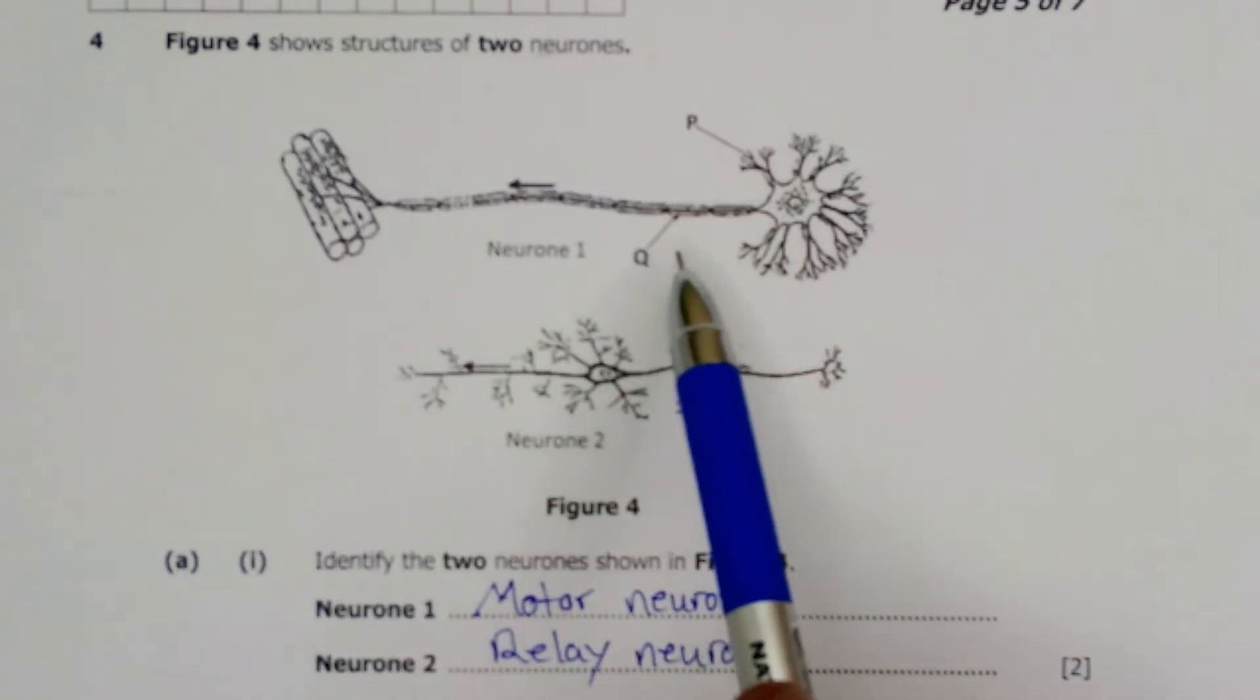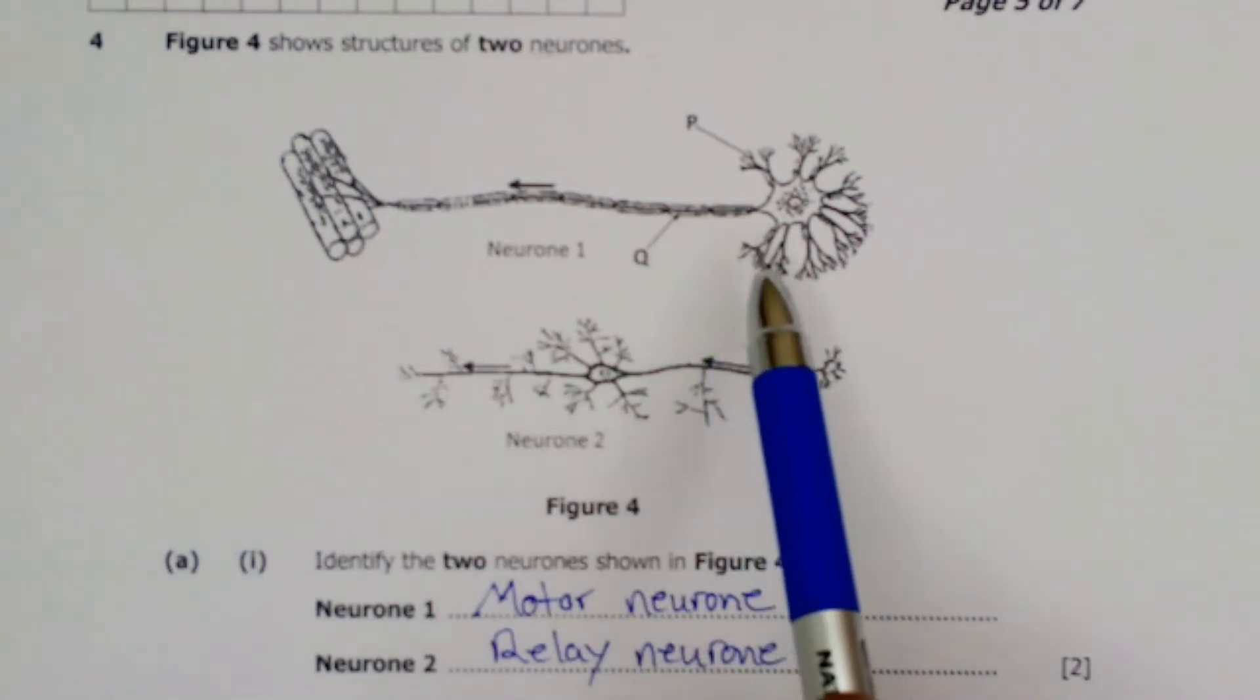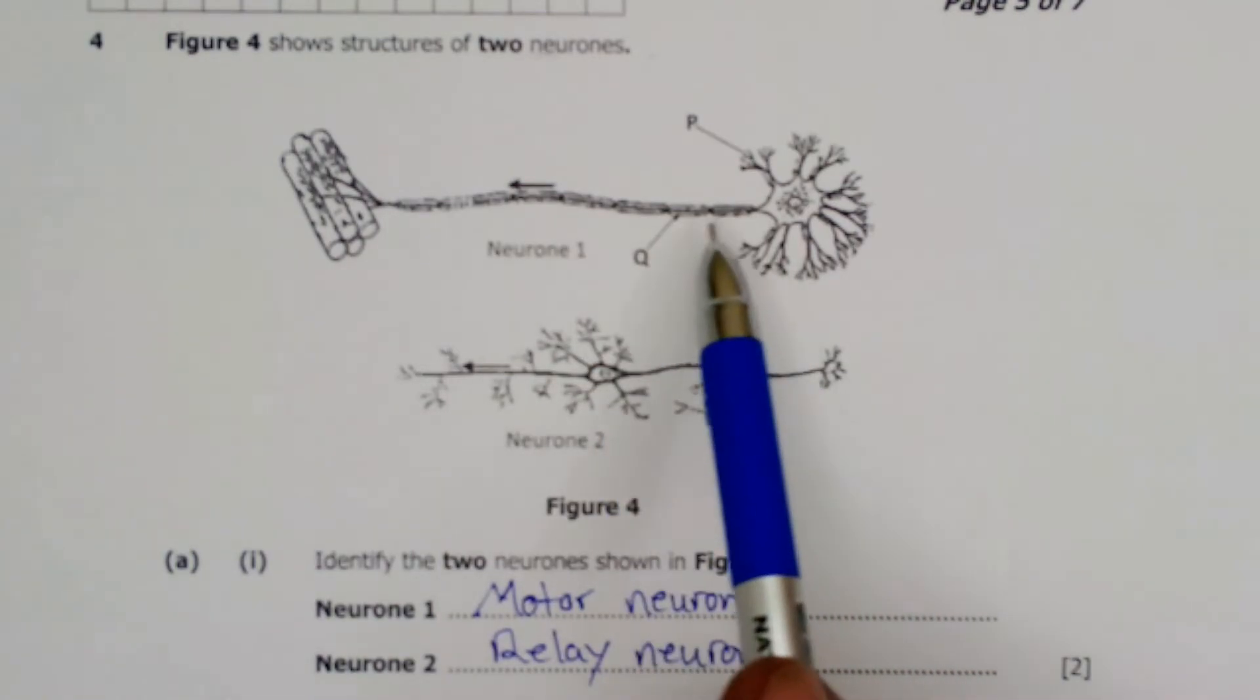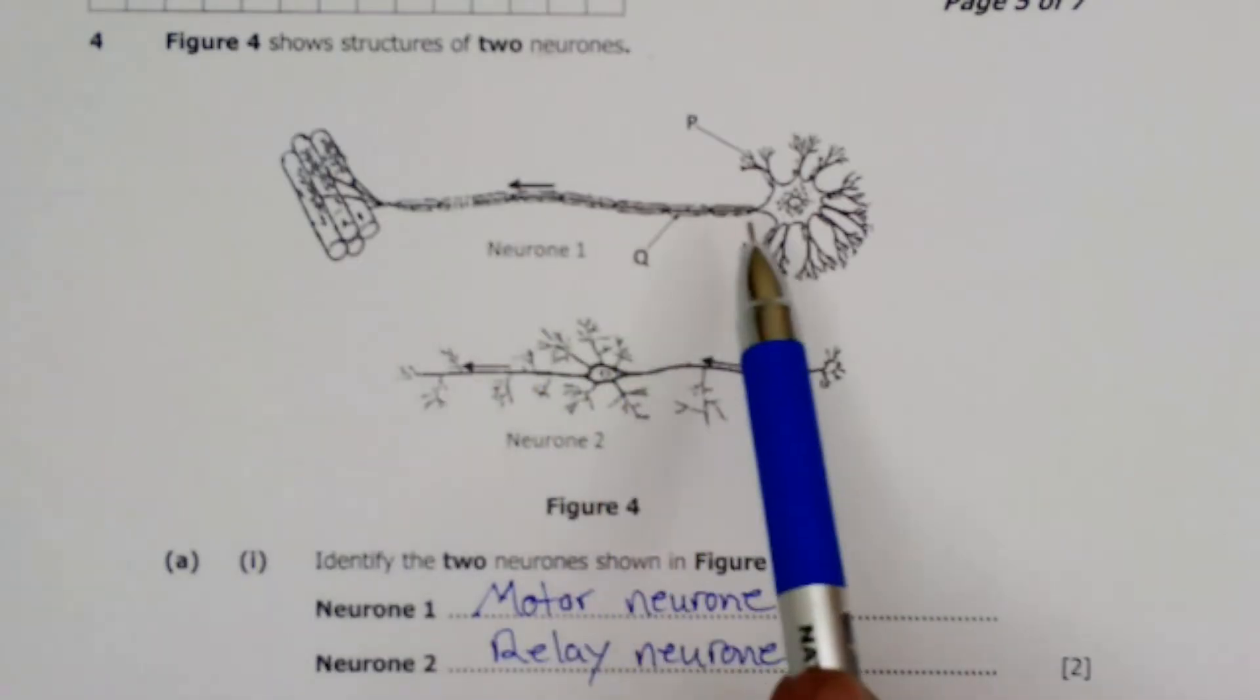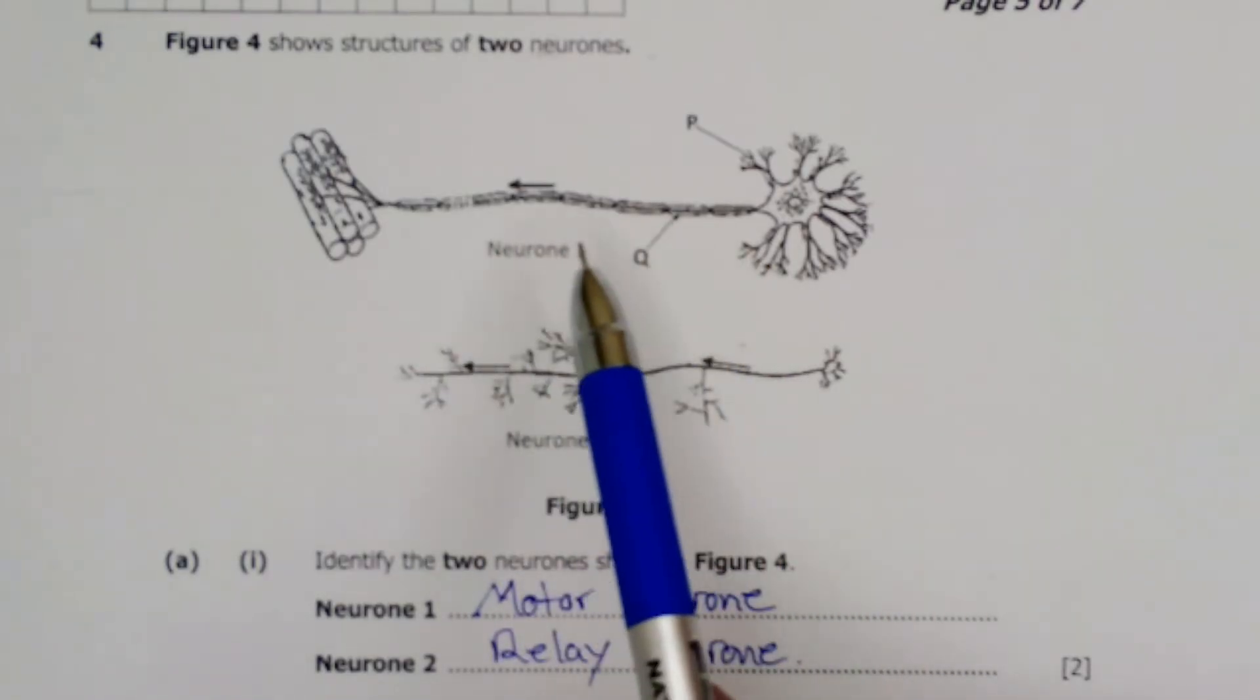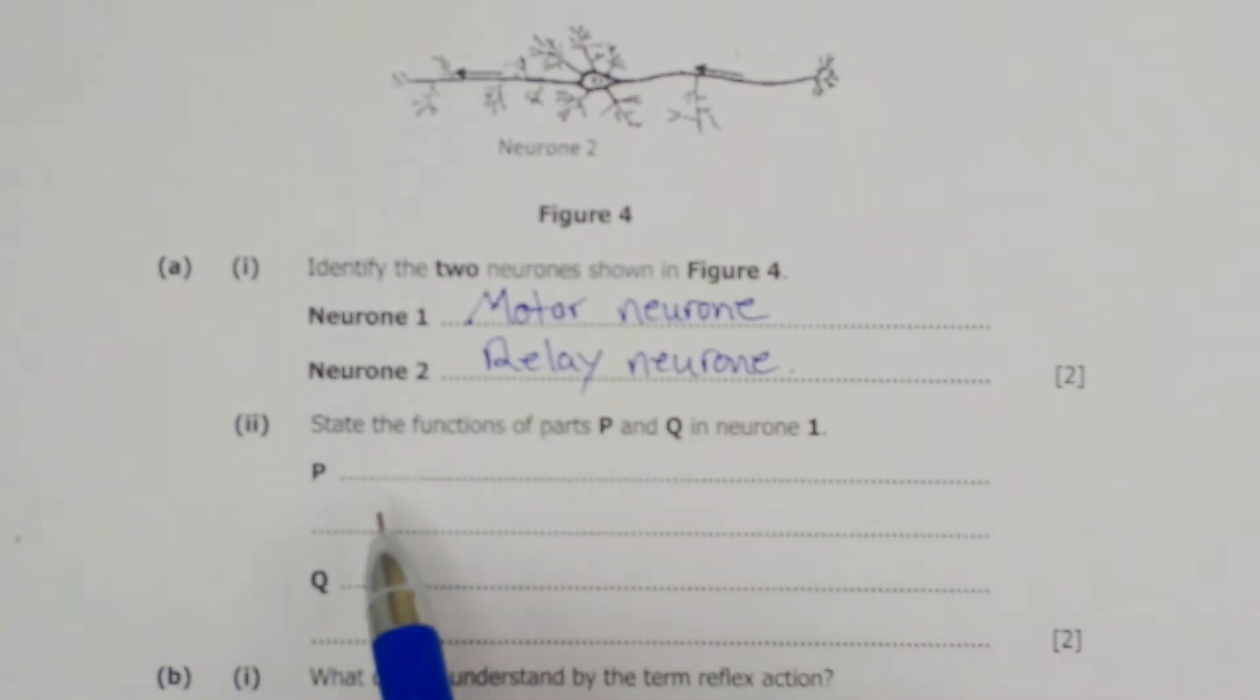Then for part Q, this is actually the myelin sheath which is surrounding the axon. So this one acts as an insulator. Just like any electric cable, you're going to find a plastic wrapping around with the wire inside, which acts as an insulator. So if you look at your headsets or your phone charger, it always has a plastic which acts as an insulator to prevent from electric shock. So we can now write down the solutions.